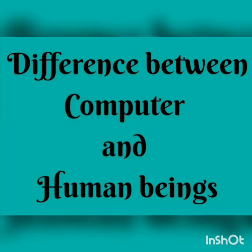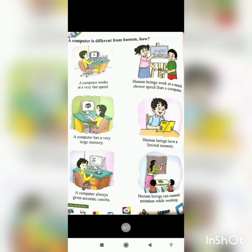Now we will discuss the difference between human beings and computers. As you know, a computer is different from humans — but how? As you can see on your screen, the first difference is speed: a computer works at very fast speed.